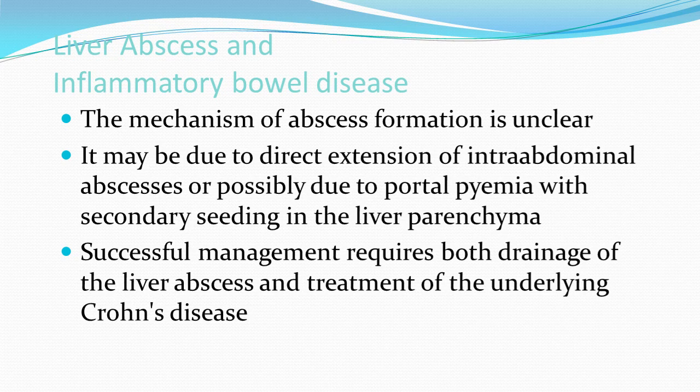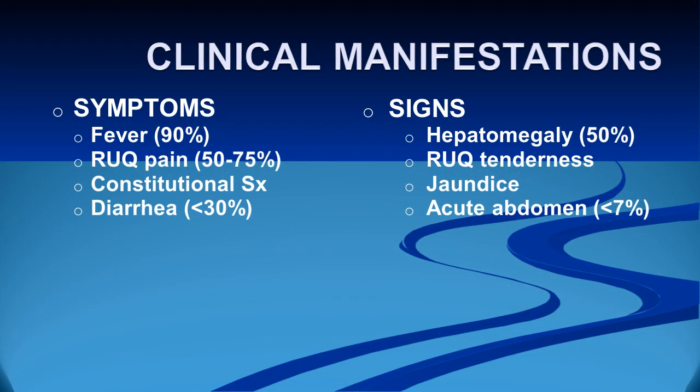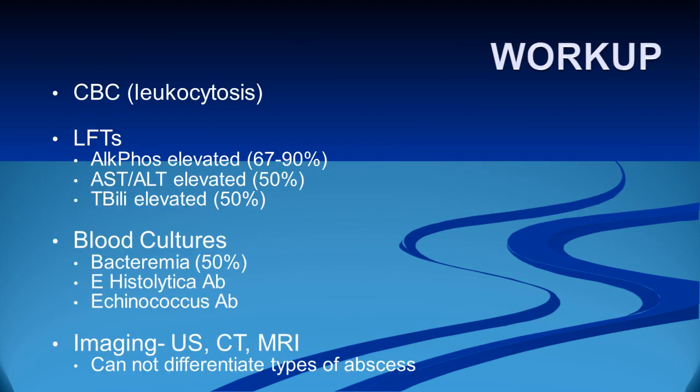In summary, symptoms of liver abscess typically include fever, right upper quadrant pain, and constitutional symptoms such as diarrhea. Signs include hepatomegaly, right upper quadrant tenderness, jaundice, and signs of an acute abdomen.